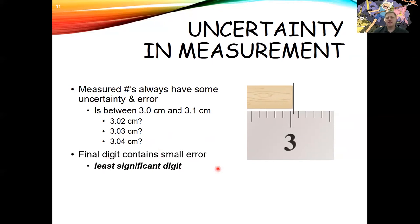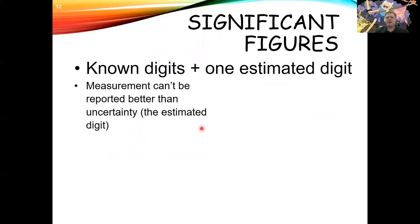This gets us into significant figures — a set of rules describing what number you can report. With significant figures, you report all your known digits plus one estimated digit at the end. So for the wood: 3.0 are the known digits plus the estimated digit gives 3.03 centimeters. The key takeaway is that measurements can't be reported better than the uncertainty of the estimated digit.